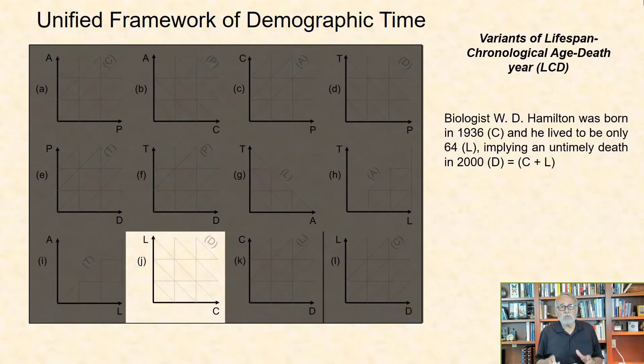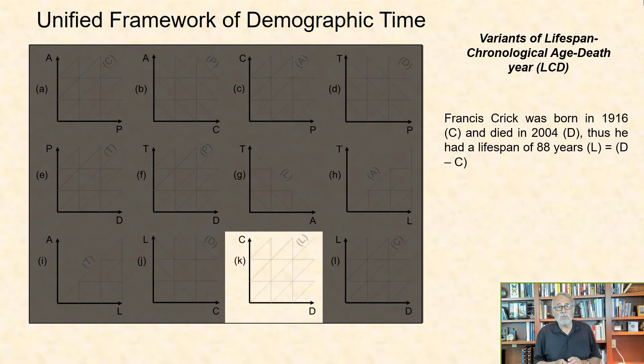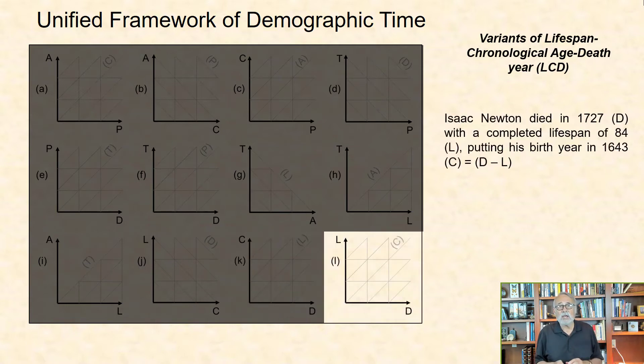Variants of Lifespan, Chronological Age, and Death Year: Biologist W.D. Hamilton was born in 1936 and he lived to be only 64, implying an untimely death in 2000. Francis Crick was born in 1916 and died in 2004, thus he had a lifespan of 88 years. Isaac Newton died in 1727 with a completed lifespan of 84, putting his birth year in 1643.